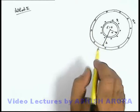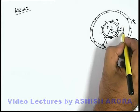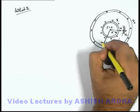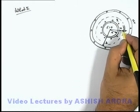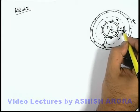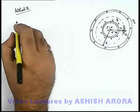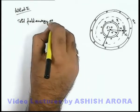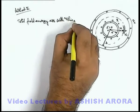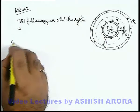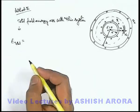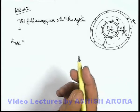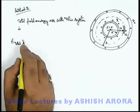To evaluate the field energy, let us consider an elemental shell at a distance x between the 2 shells, with width dx and radius x from the common center. The total field energy associated with this system — E_total — can be written using the principle that whenever work is done in assembling a system of charges, it is always stored in the form of the total field energy of the system.